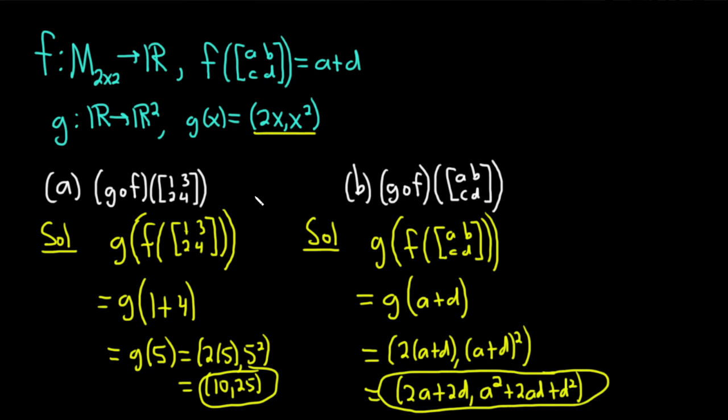So just a simple example of computing function compositions where one of your functions actually takes a matrix and sends it to a real number, and the other one takes a real number and sends it to an ordered pair. So a little bit different from the typical examples that you might see in like a basic algebra class. I hope this video has been helpful to someone. Good luck.